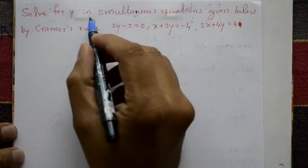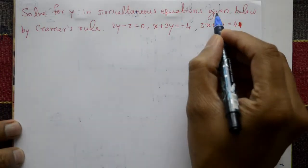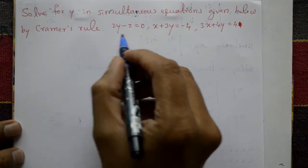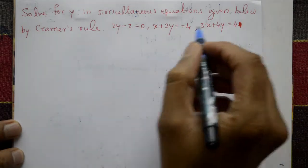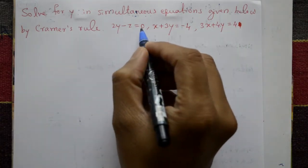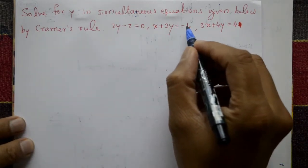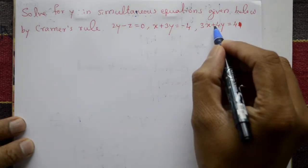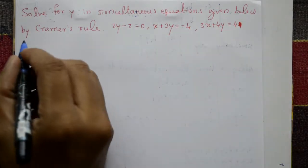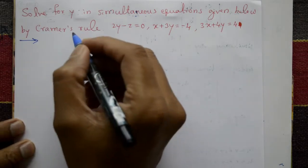Solve for y in simultaneous equations given below by Cramer's rule. Three equations are given: 2y minus z equals 0, x plus 3y equals minus 4, 3x plus 4y equals 4. Using Cramer's rule, find only the y value.